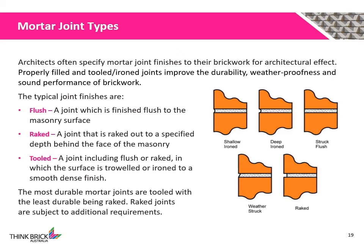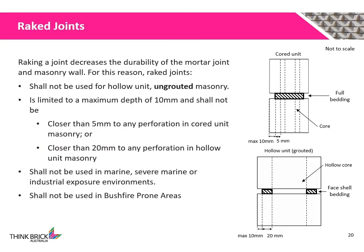Raked joints are subject to additional requirements. Raking a joint decreases the durability of the mortar joint and masonry wall. For this reason, raked joints shall not be used for hollow ungrouted masonry, are limited to a maximum depth of 10 mm, and shall not be closer than 5 mm to any perforation in cored unit masonry, or closer than 20 mm to any perforation in grouted hollow unit masonry. Raked joints shall not be used in marine, severe marine, or industrial exposure environments, or bushfire prone areas.